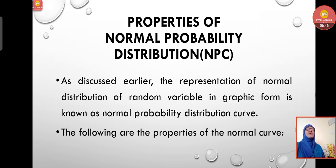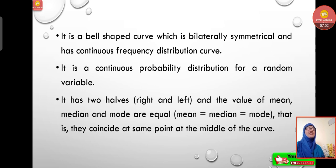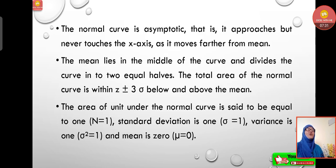Now let's see the properties of the normal curve. The normal probability distribution curve is bell-shaped and bilaterally symmetrical with a continuous frequency distribution. It is a continuous probability distribution for a random variable. It has two halves — right and left — and the values of mean, median, and mode are equal, coinciding at the same point in the middle of the curve. The normal curve is asymptotic, meaning it approaches but never touches the x-axis as it moves further from the mean.